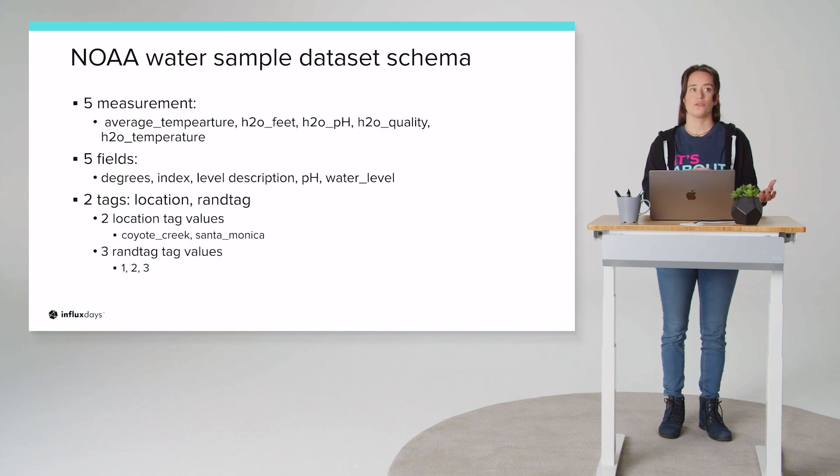So to better highlight and understand grouping, which I think is really the biggest hurdle that beginner Flux users face, I wanted to take an example from an actual data set and do some manipulation with Flux to answer some questions that we might want to understand or derive from this data. So we'll be looking at a data set from the National Oceanic Atmospheric Administration. And this data set describes water levels in two creeks from Santa Monica and Coyote Creek. And specifically, we'll be looking at the average temperature measurement.